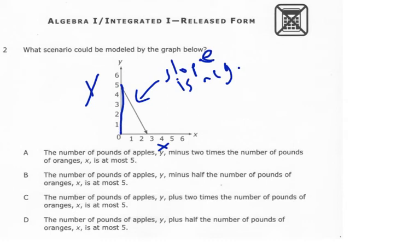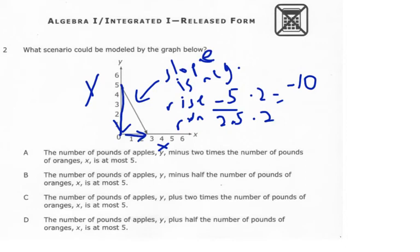So that's going to rise and run. Let's talk about the rise and the run. The rise is down 5, so negative 5. And then the run is going to be to the right, which is positive, 2 and a half. Well, I don't really like the looks of that, so I'm going to get rid of that decimal by doubling both of those values. And if I double both of them, that would give me negative 10 over 5.